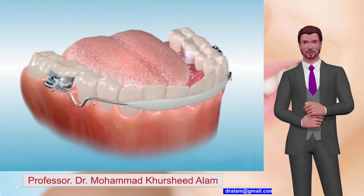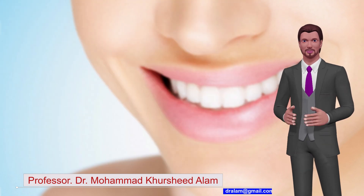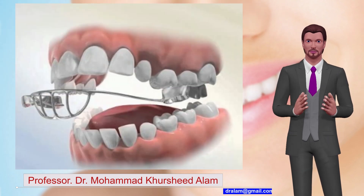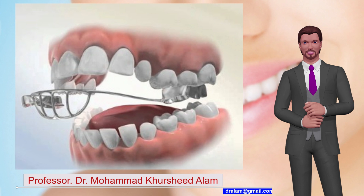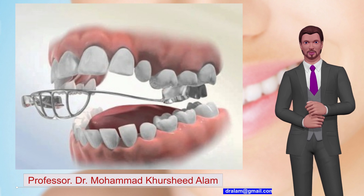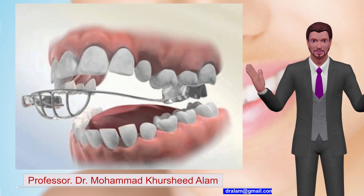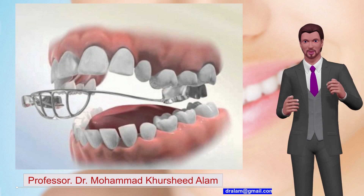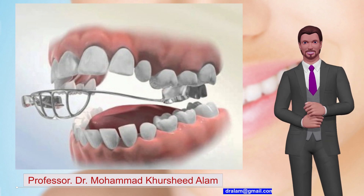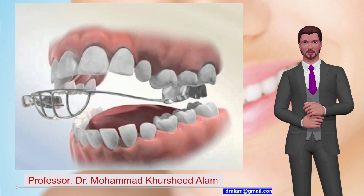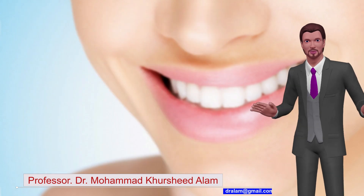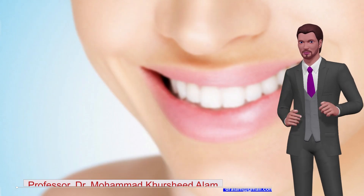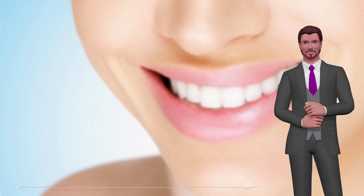Number 12: Tongue Crib. An interceptive habit-breaking appliance. Used to correct thumb sucking habit and tongue thrusting habit. Can also be used as part of removable appliances in patients with unilateral or bilateral posterior open bite. Thank you very much for your patience watching. Please like, share, and subscribe.